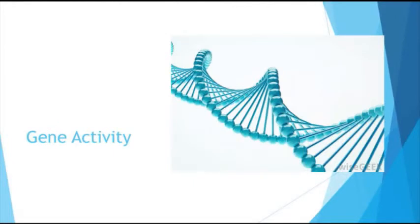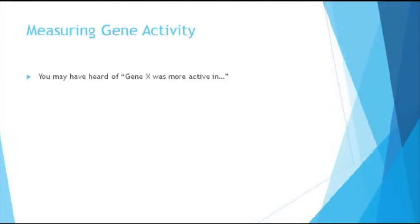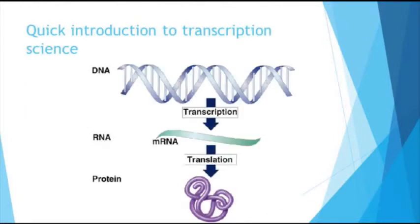Right, gene activity. So this you may have heard of in terms of statements in press releases, like GeneX was more active under these conditions. So I wanted to quickly dive into how on earth do you work that out. A quick dive into transcription science. So I don't know how much you guys have come across this, but you've got DNA, and then DNA is read in a process called transcription. So proteins read it, and then they create something called mRNA, which is effectively a copy. It's a single-stranded copy of the DNA. The mRNA is then read by another protein, and that's turned into a protein. So the DNA is read to make mRNA, and mRNA is read, and that makes protein.